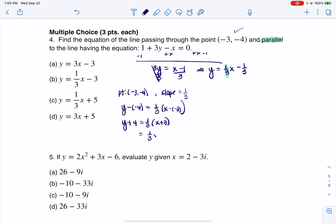If I distribute this, this is 1/3 x plus 1. So I would have y plus 4 equals 1/3 x plus 1. If I subtract 4 from both sides, I get y equals 1/3 x minus 3, and that is option B.